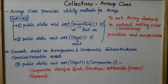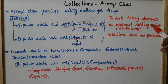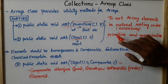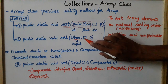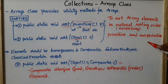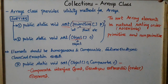What do we do with these two sort methods? There is a natural sorting order. Natural sorting order is ascending order, and this applies to both primitive and non-primitive data types.